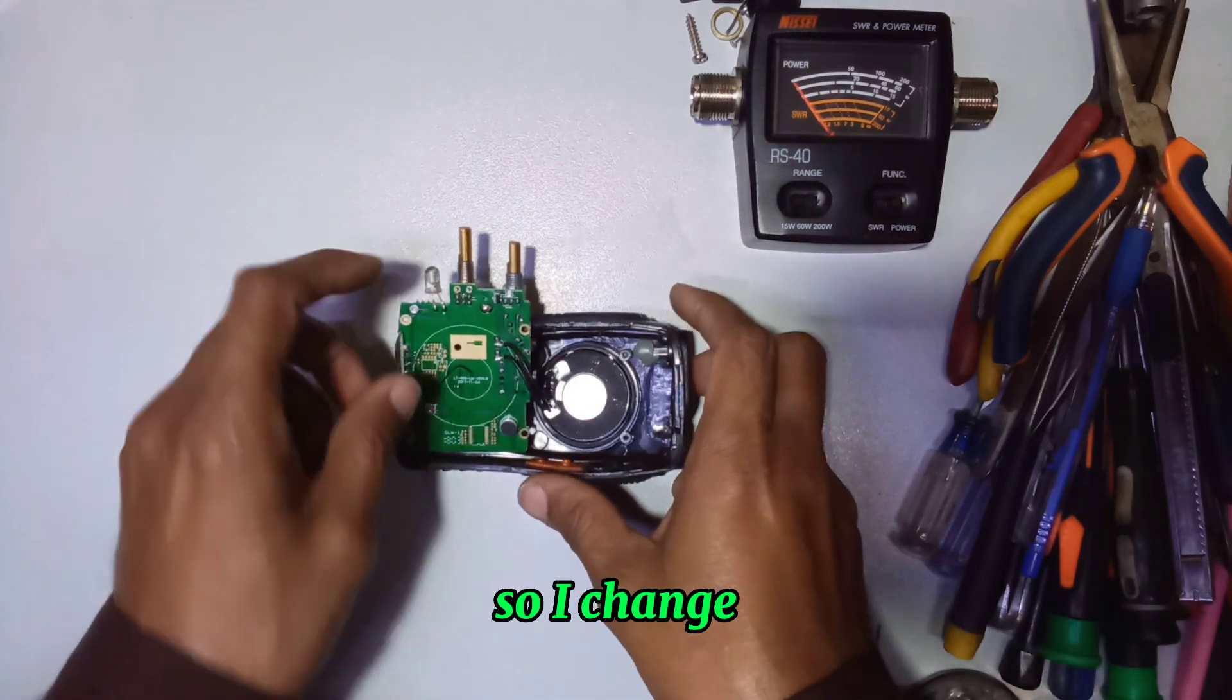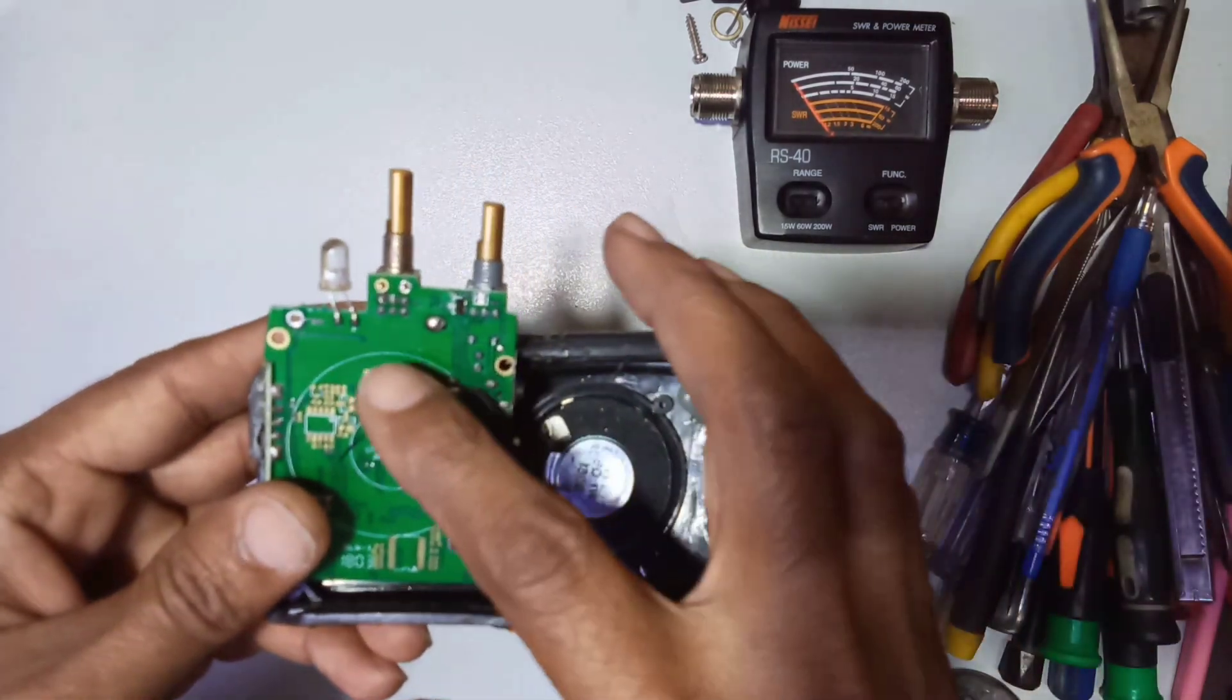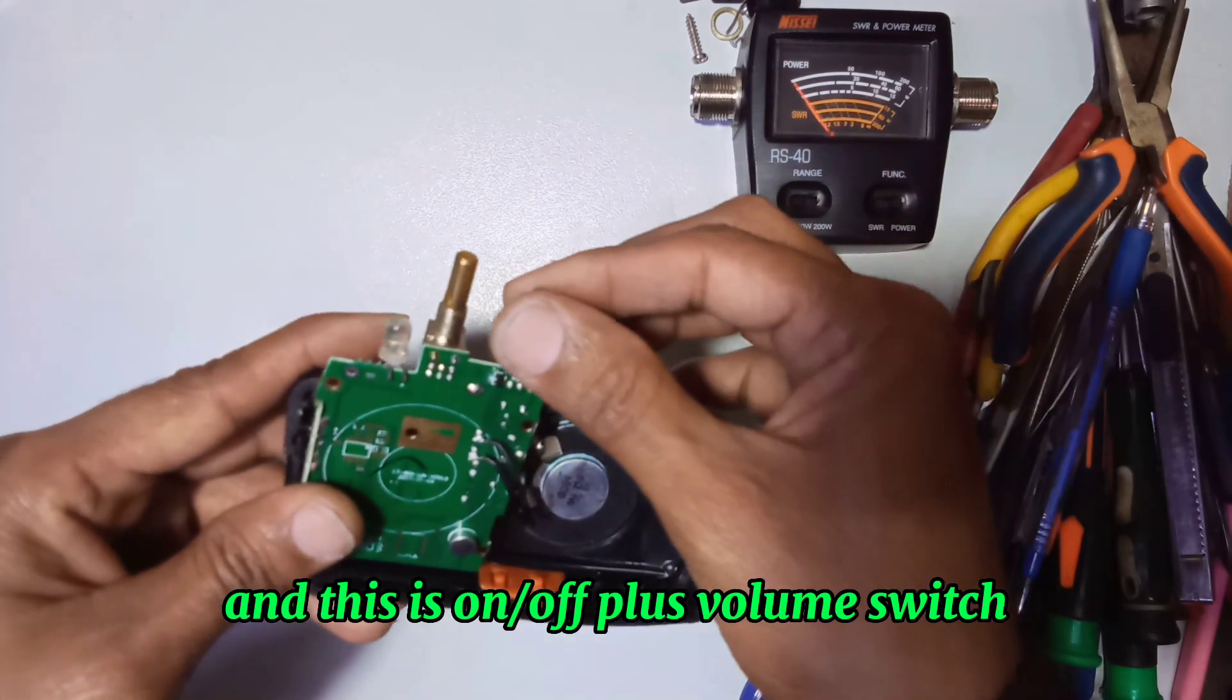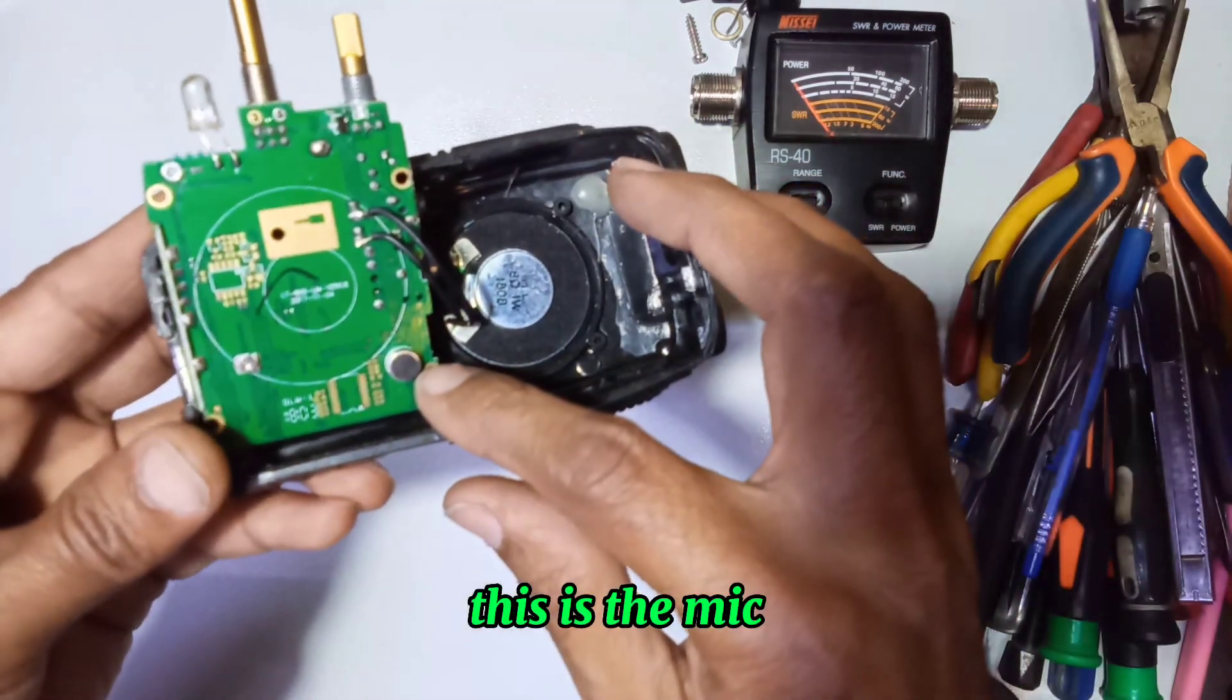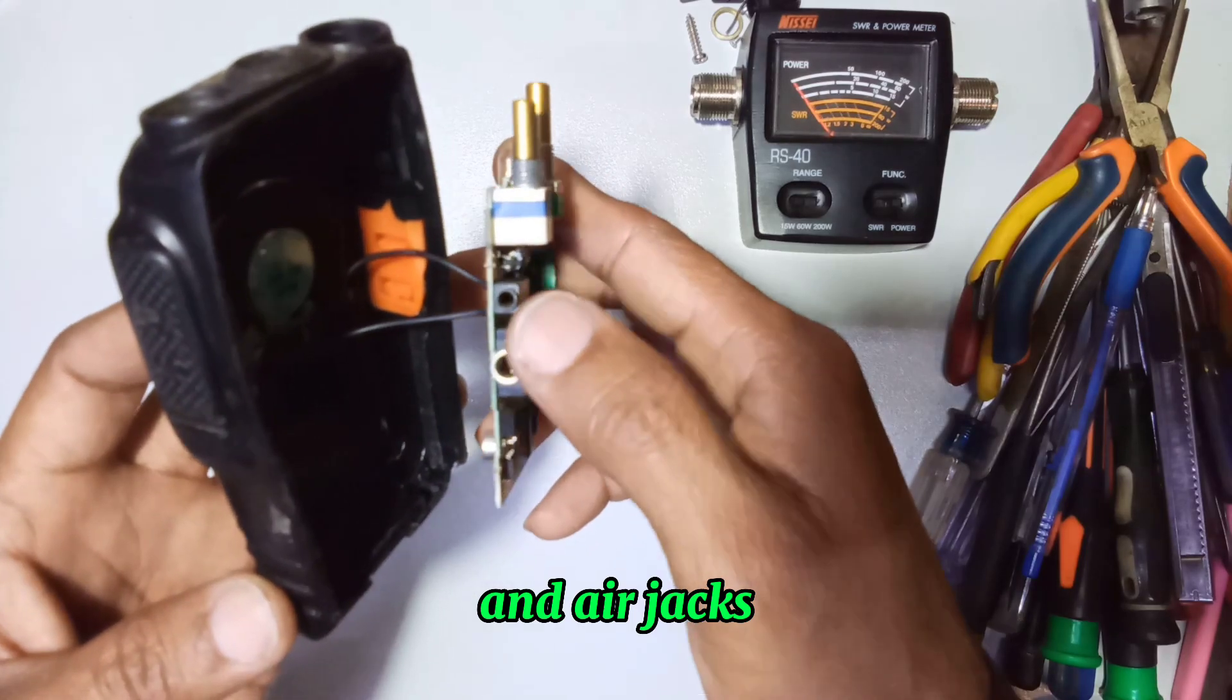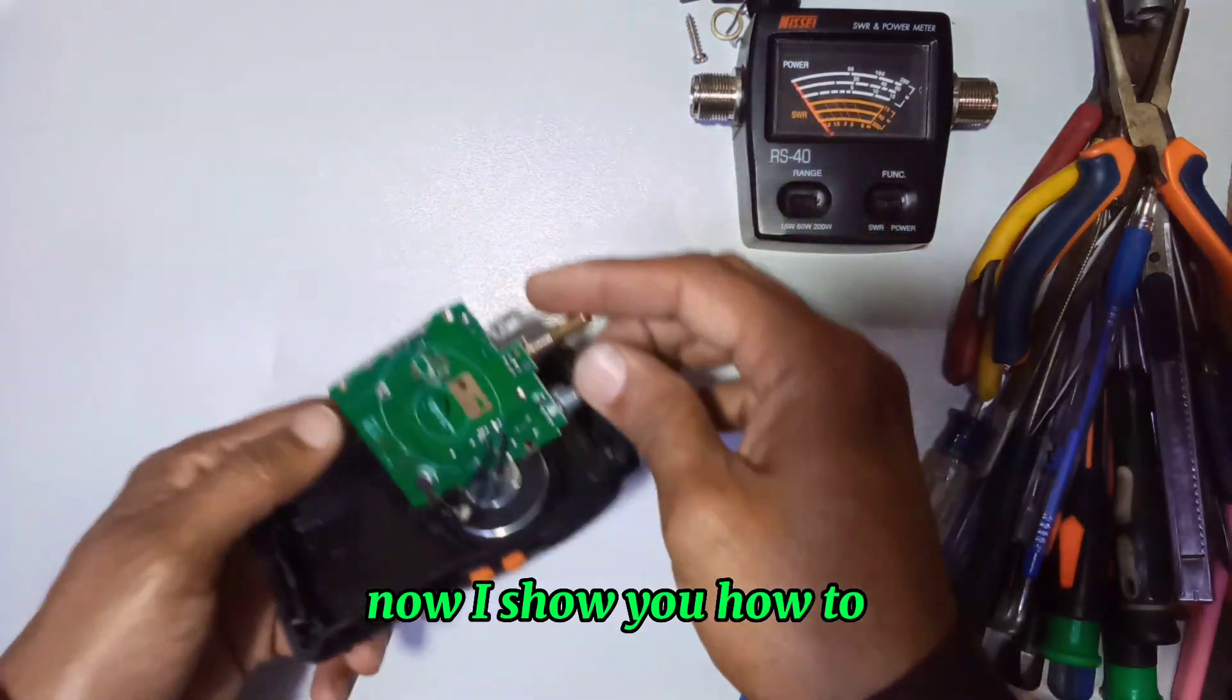If I can show you, this is the channel switch and this is the volume switch. This is the mic, this is speaker, and here are the jacks. Now I show you how to change the switch.